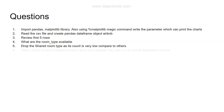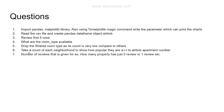Question six: take the count of each neighborhood to show how popular they are in terms of number of Airbnb apartments — for example, neighborhood A has 100 apartments, neighborhood B has 80, and so on. Question seven: find the number of reviews given for each property — how many properties have zero reviews, one review, and so forth — giving you the review value and its respective count.